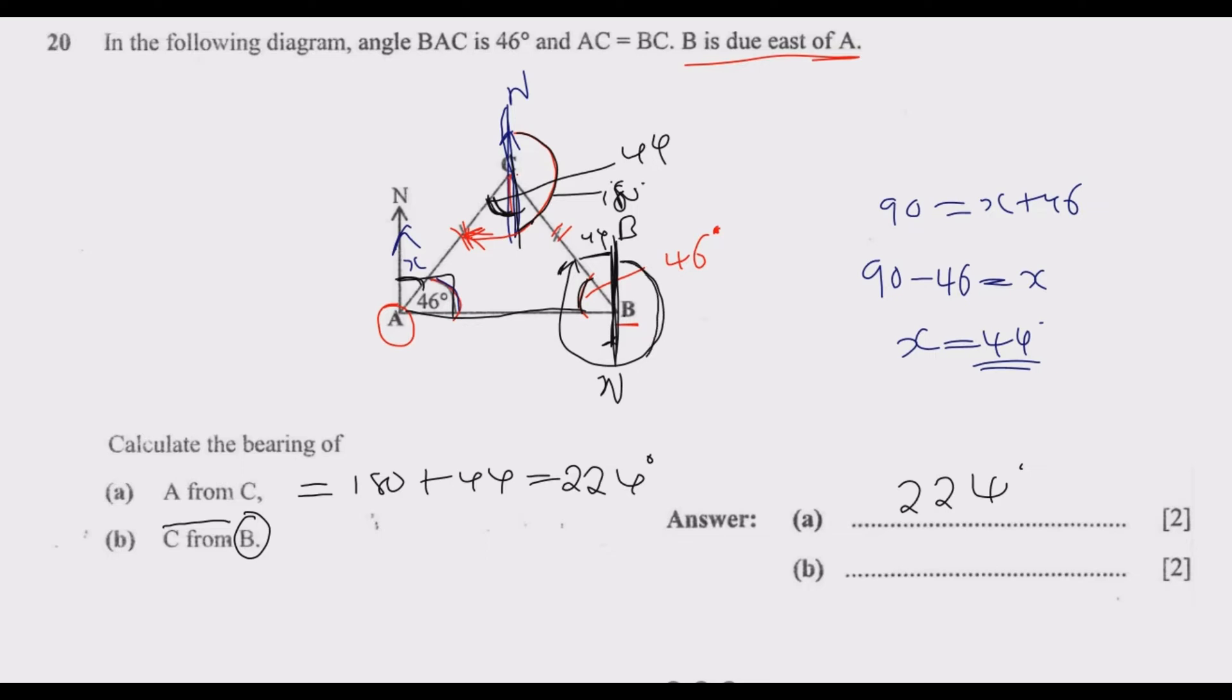To find the angle from here to here, we need to subtract 44 from 316. So to find the bearing of C from B, we calculate 316 - 44 = 316. Wait, let me recalculate: 360 - 44 = 316 degrees. So 316 degrees is the bearing of C from B. That's basically how you answer this question to get the full 4 marks.